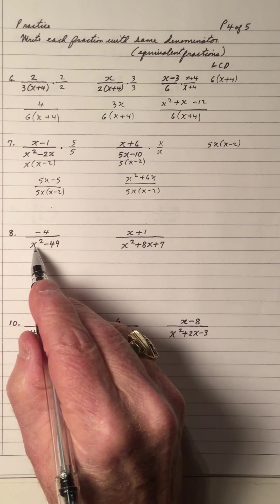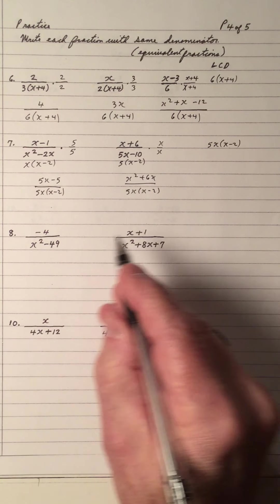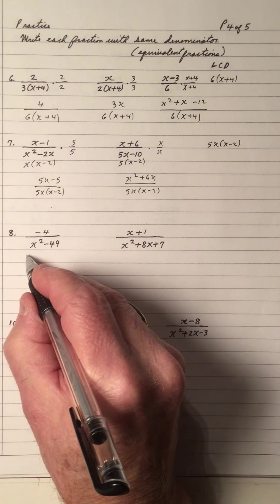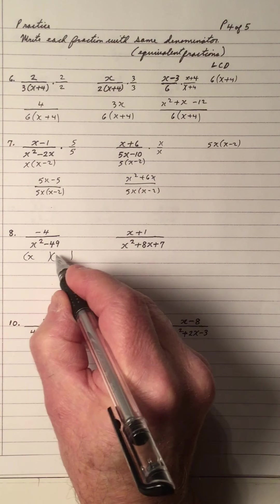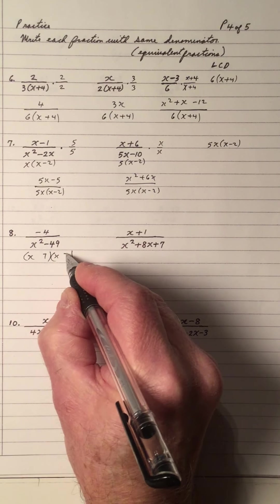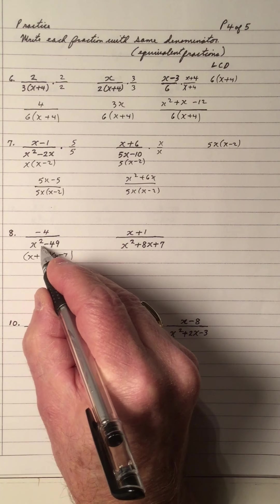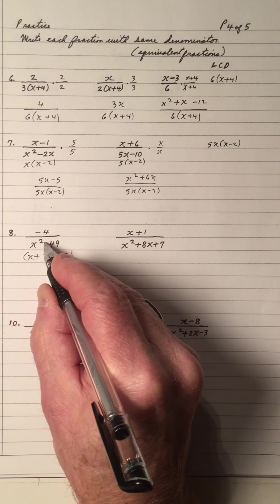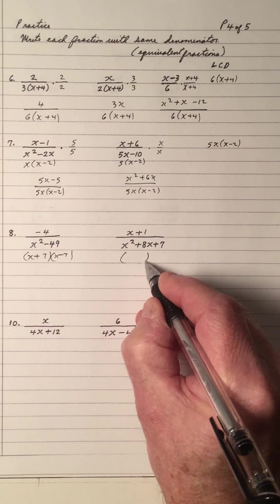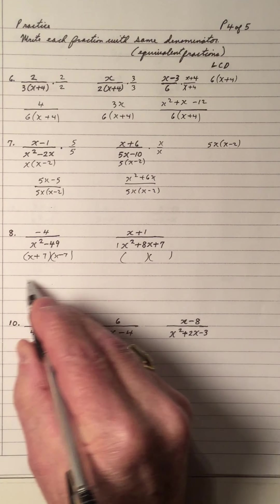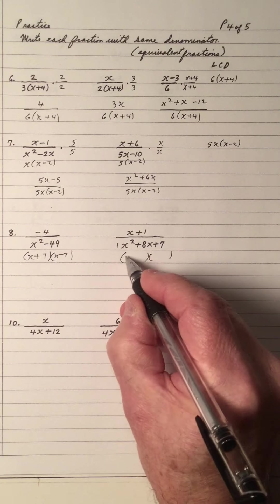Number 8. I checked — descending order, yes. So I have to factor — difference of two squares: x, x, 7, 7, plus and minus, because there's no 0x in the middle. And this one is factorable — I expect one of the factors here will appear over there. So we have x and x to give x squared; factors of 7 are 7 and 1.